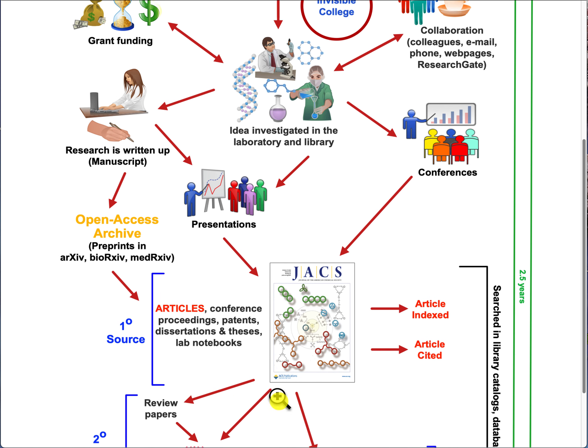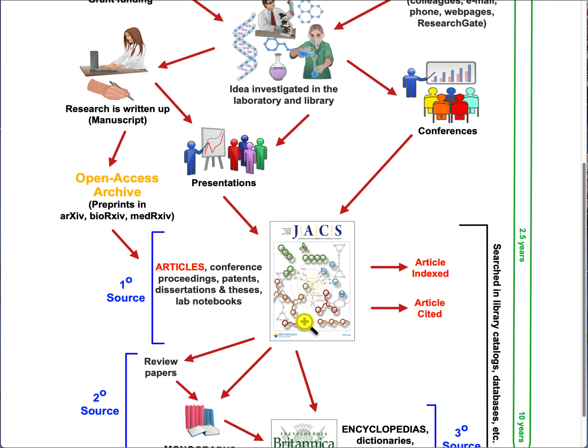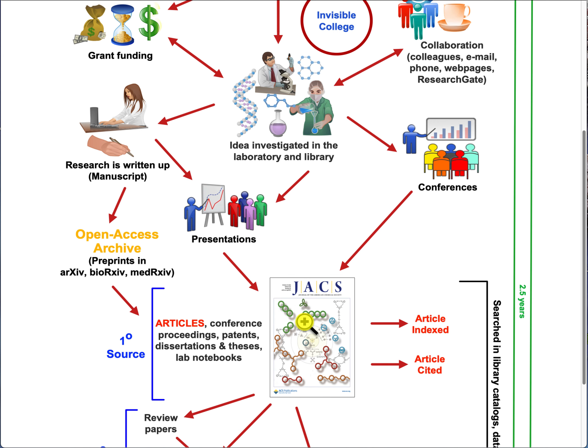When thinking about where to search for articles and review papers, the best place is through an academic database. Resources like Google and Wikipedia are often suspect because the information there has not gone through a peer review process. That said, at the end of some Wikipedia pages you do find links to some good quality peer-reviewed journal articles.